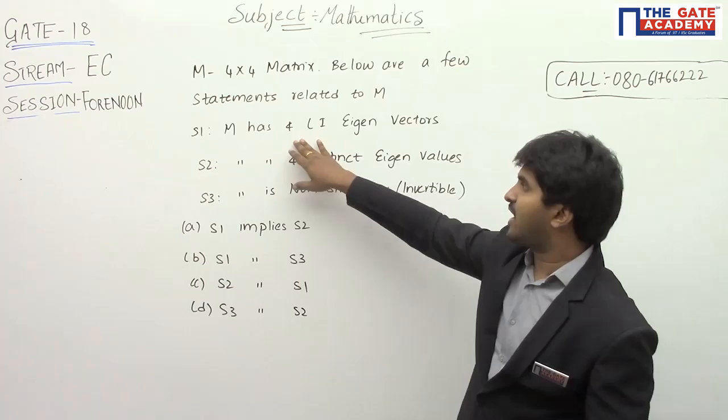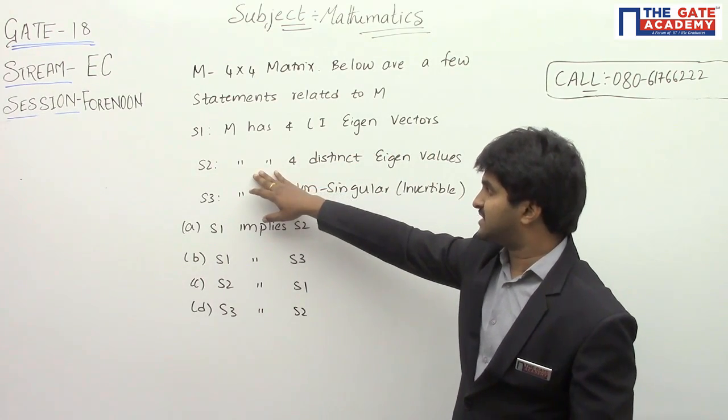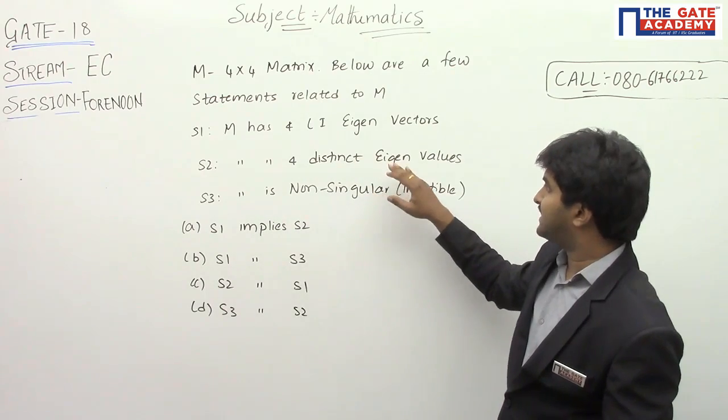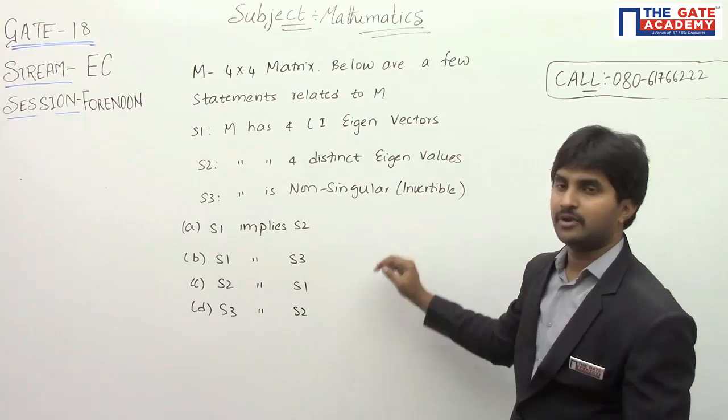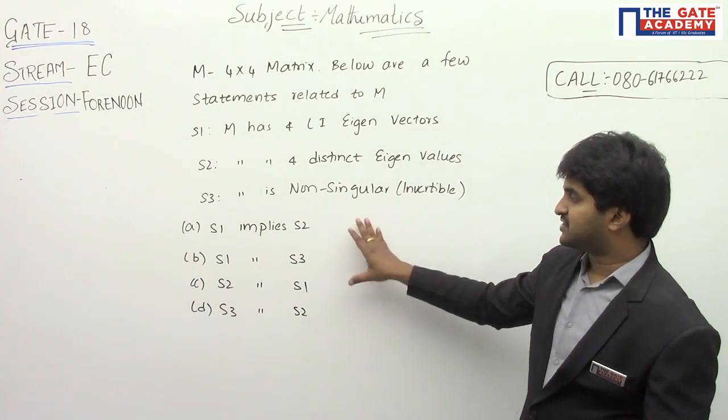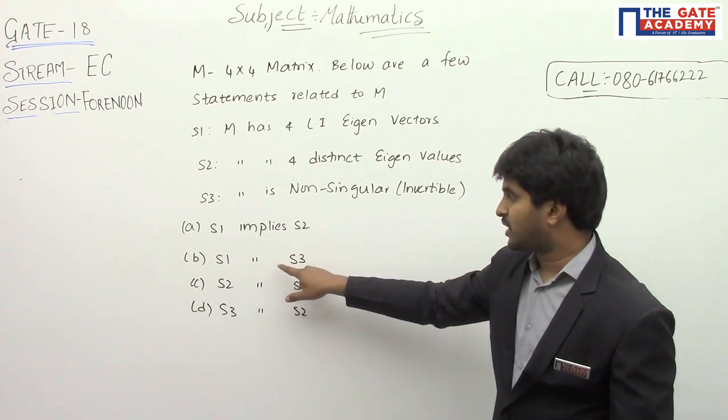Statement one says that M has four linearly independent eigenvectors. Second statement is that M has four distinct eigenvalues. Third one is M is non-singular in nature. Now what are the options given here? S1 implies S2, S1 implies S3, S2 implies S1, S3 implies S2.